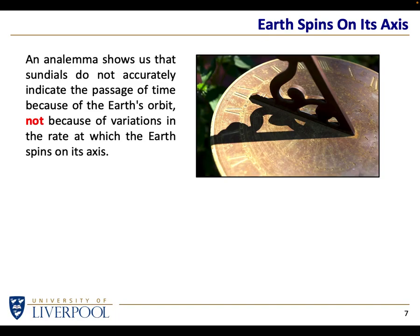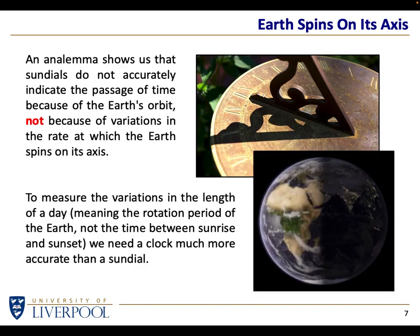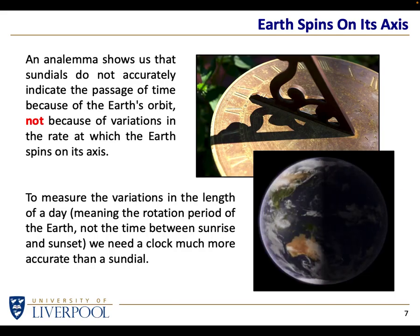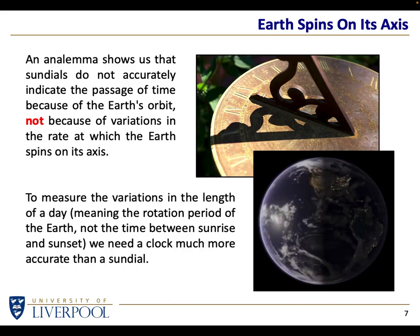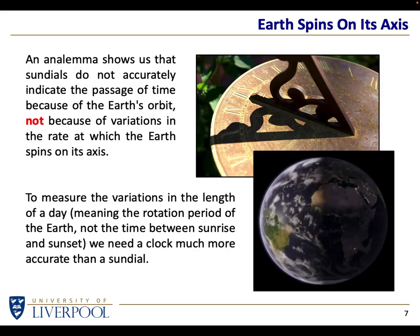That's why sundials don't always read correctly — they can be off by as much as 15 minutes one way or the other, because the shadow is based on where the Sun is, and the Sun is not always in the same place every day due to the east-west variation caused by the Earth's orbit, not the intrinsic rotation of the Earth.